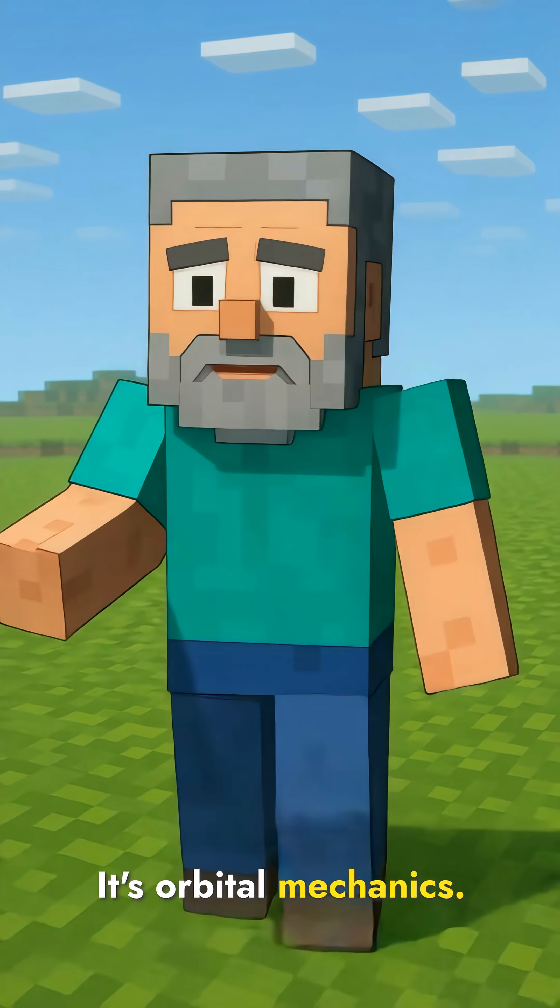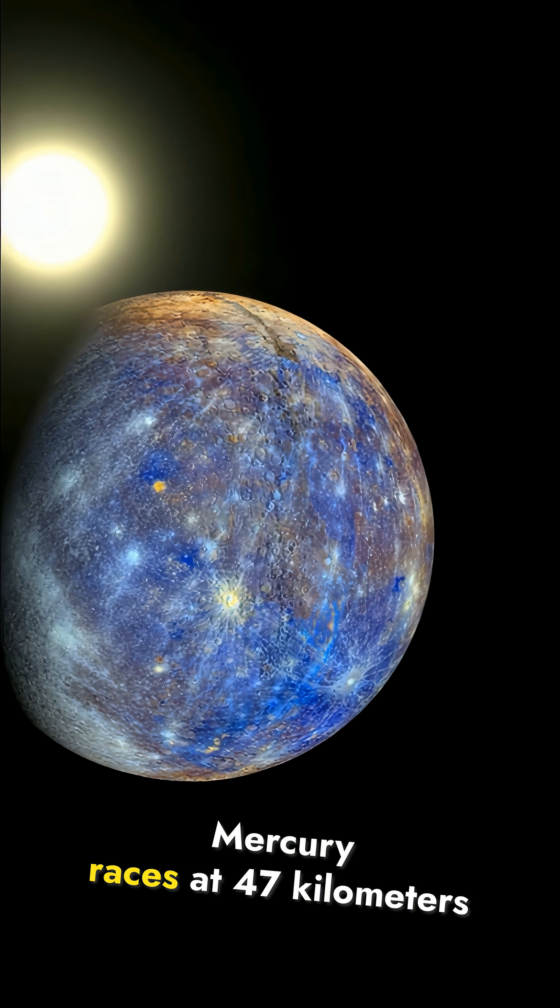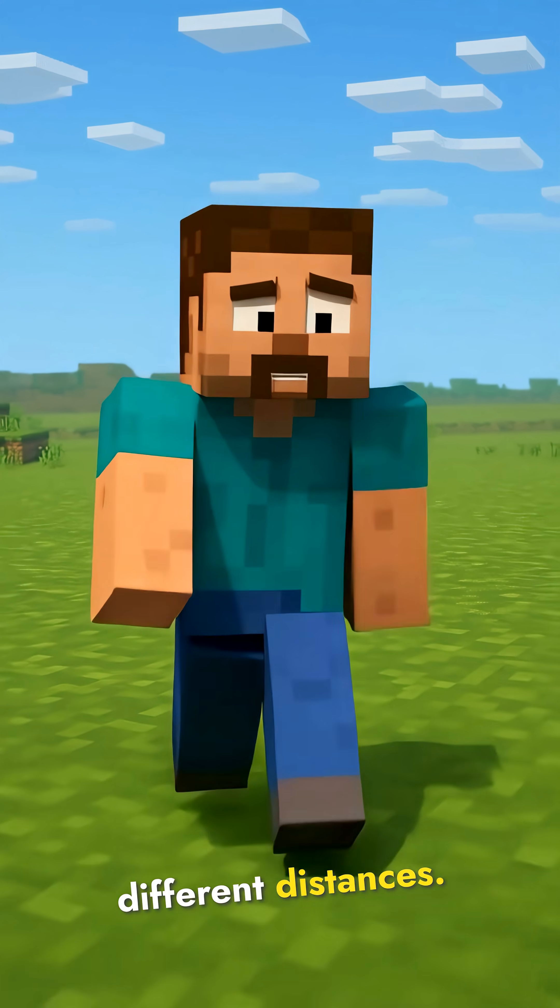This isn't magic, it's orbital mechanics. The farther you are from the sun, the longer your path and the slower you move. Mercury races at 47 kilometers per second. Neptune, just 5 kilometers per second. Same physics, different distances.